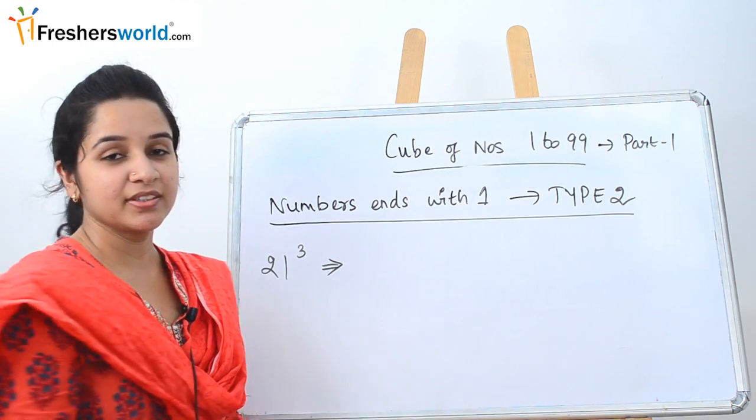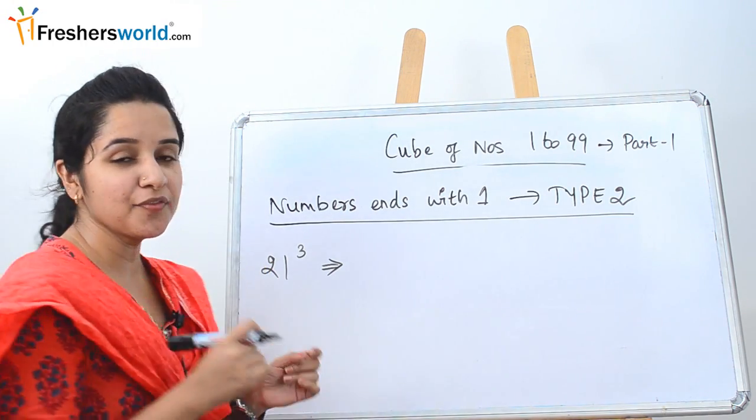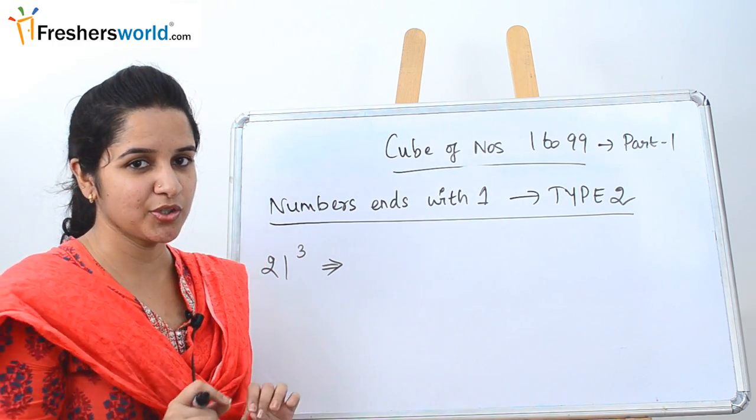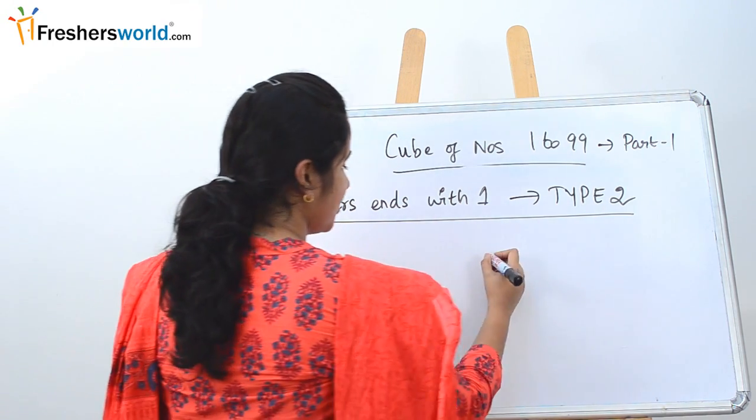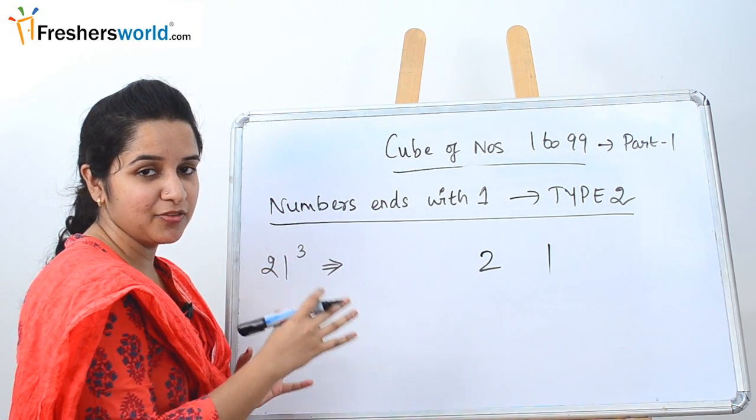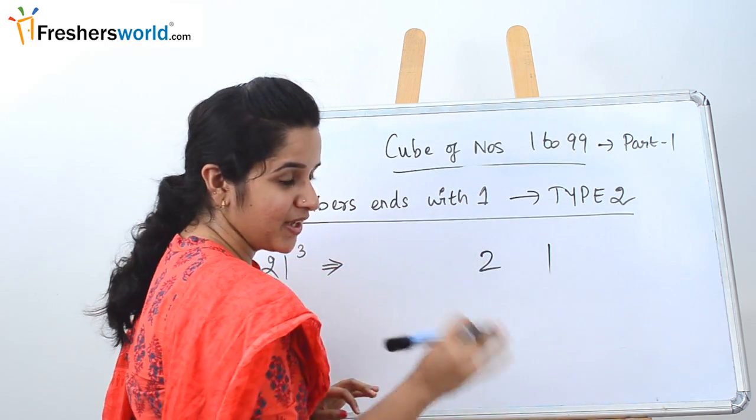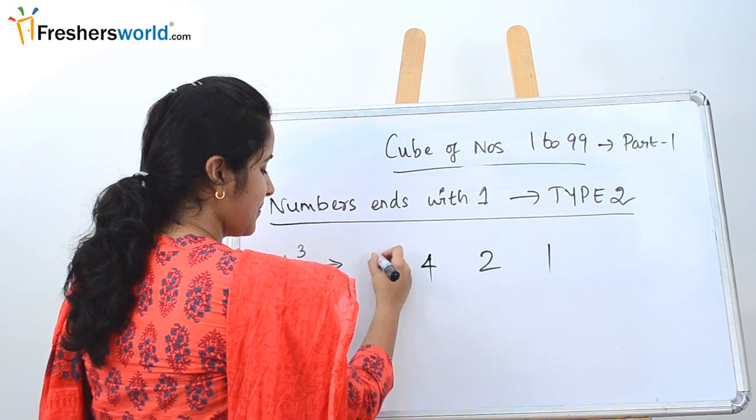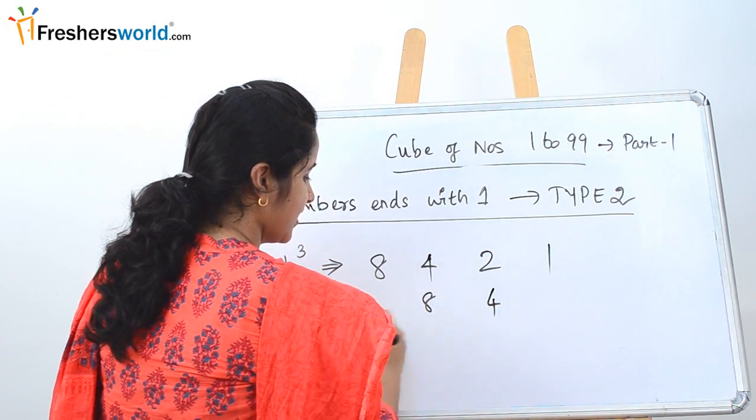Let's go to type 2. Type 2 is numbers ending with 1. In case of the first type we talked about numbers starting with 1. Similar technique with a slight change. The question given is 21 cube. You write 21 as such but at the end this time. Initially we wrote in the starting part for numbers starting with 1. The opposite we do here. So we write it at the end. Same way: 2 square is 4, 2 cube is 8. Similarly multiply the middle digits by 2: 2 times 2 is 4, 4 times 2 is 8. Now add it.